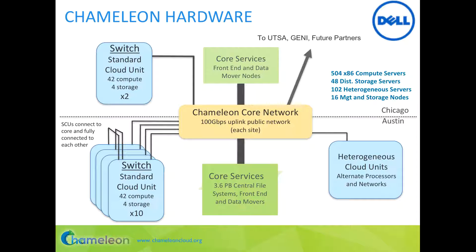The building block of Chameleon hardware is what we call a standard cloud unit, a rack composed of 46 Intel Haswell nodes. We have 12 of those racks distributed between two sites, University of Chicago and the Texas Advanced Computing Center, or TAC, connected by a 100 gigabit network. They form a large homogeneous partition that can support large scale experiments. To store experimental data, we have roughly three and a half petabytes of global storage, and we also support heterogeneous hardware at smaller scales.